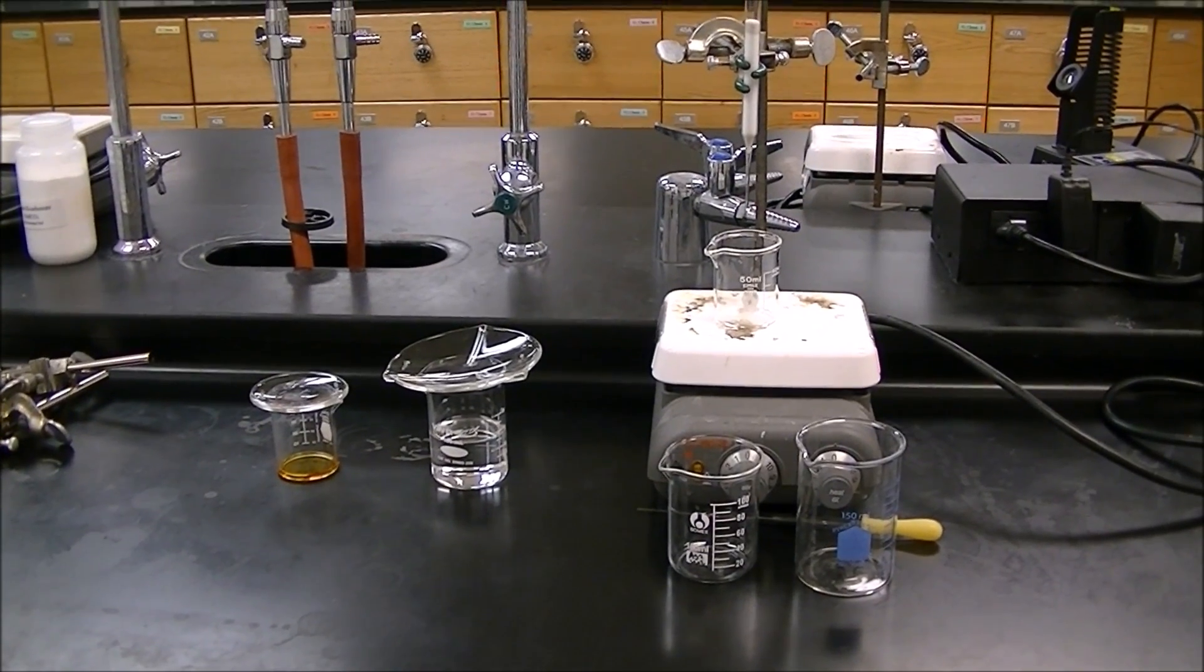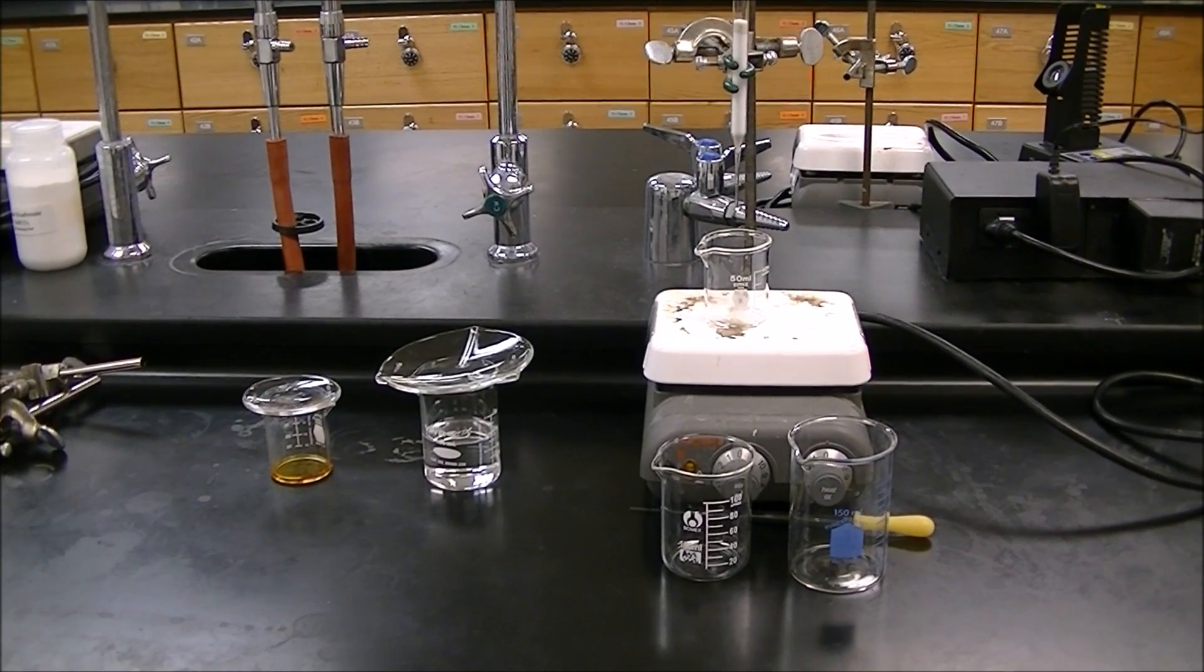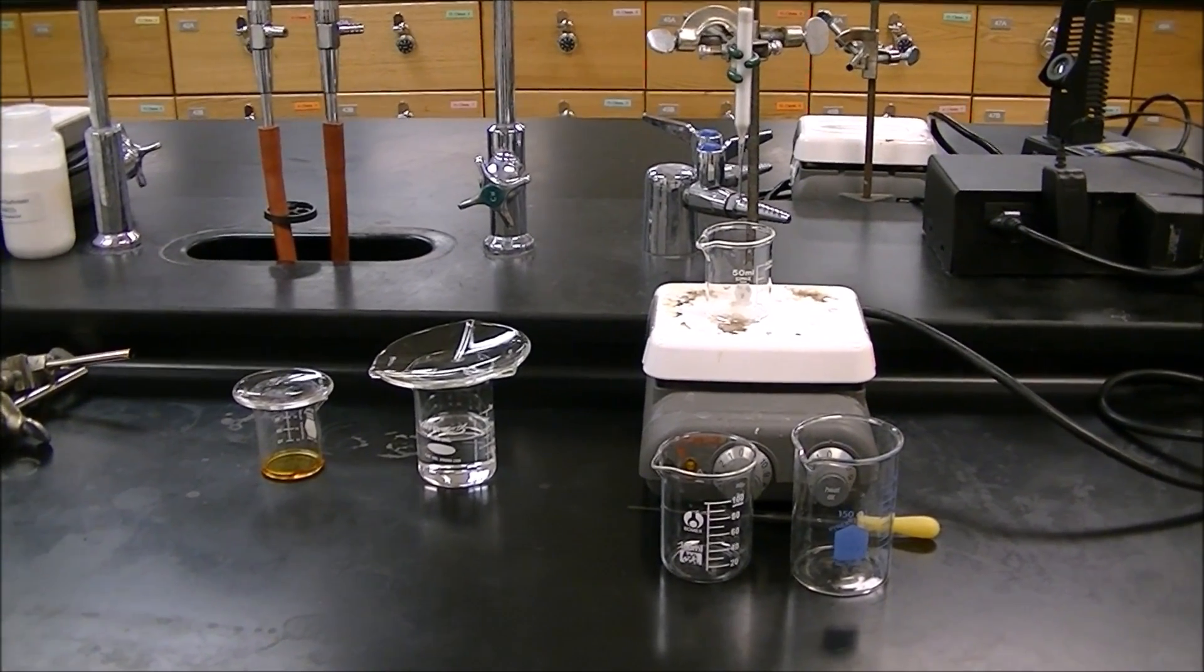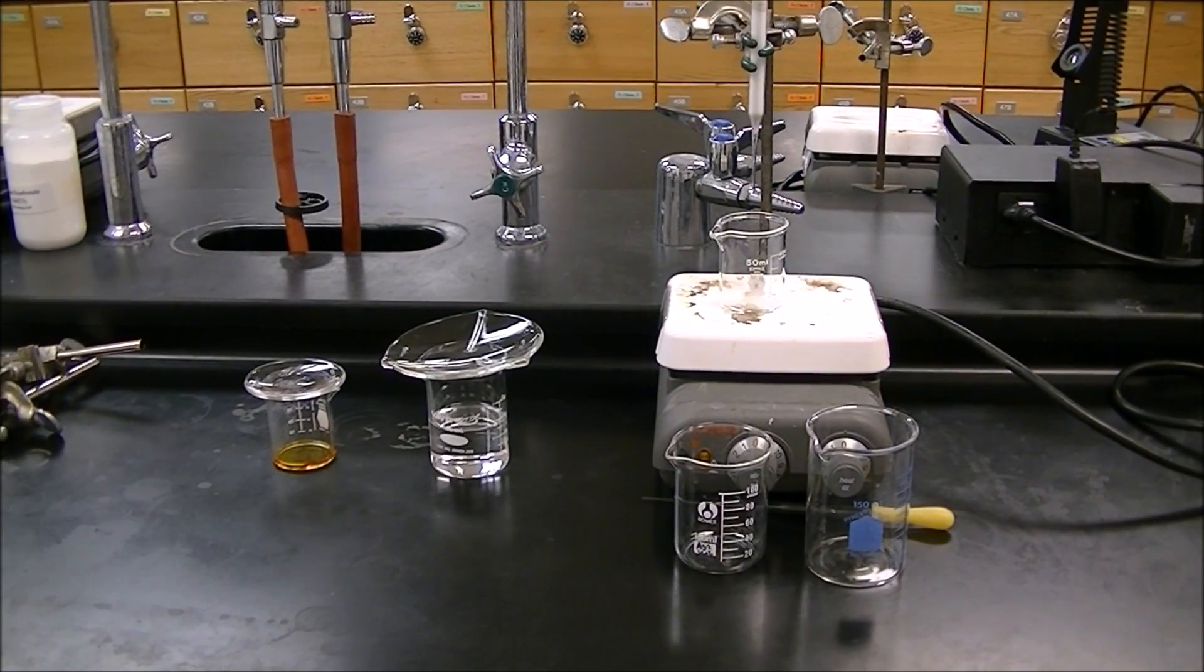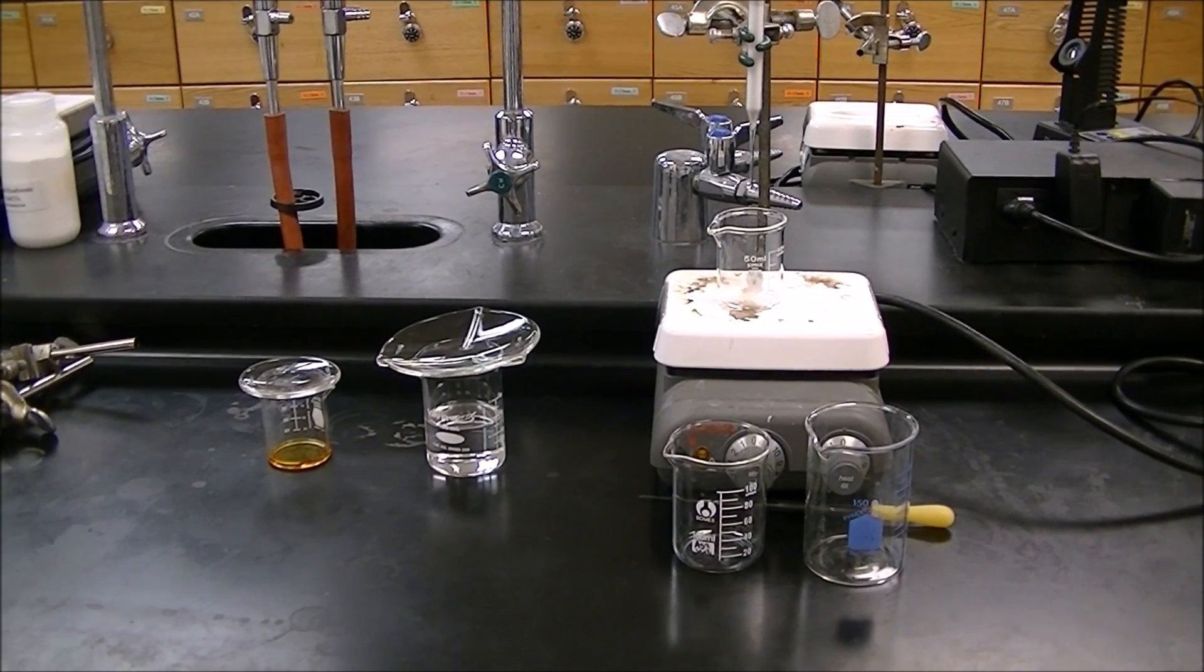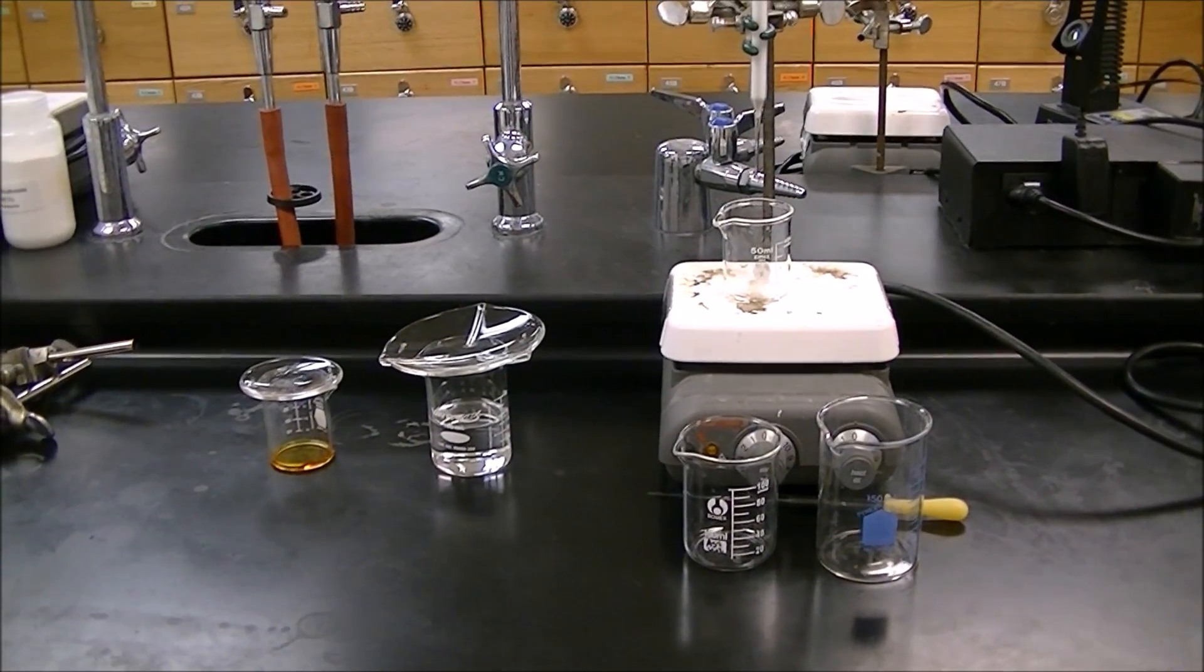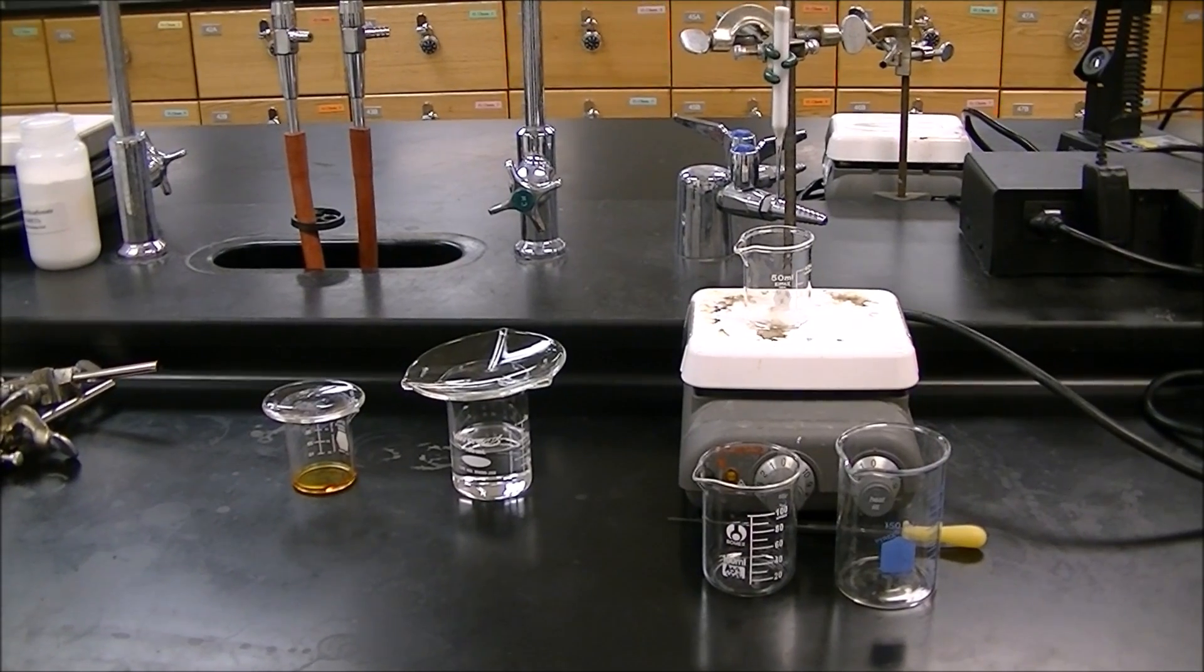Now we're ready to start the separation through the column. We have our concentrated azobenzene mixture on the left there in orange. We have our 99 to 1 hexane and methanol solution. We have a couple extra beakers down here for our separate collections of the different bands that will come off the column.